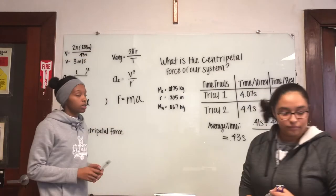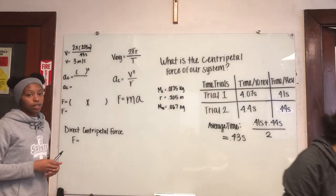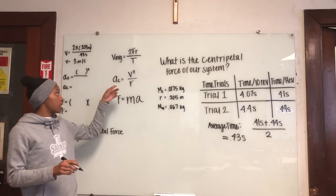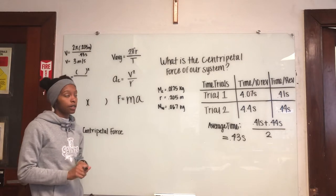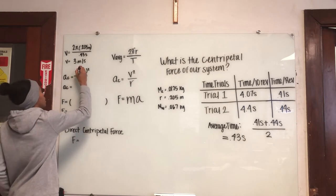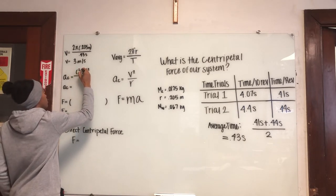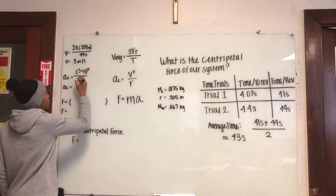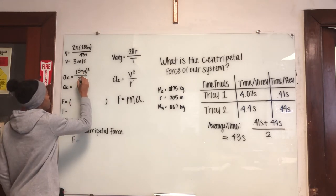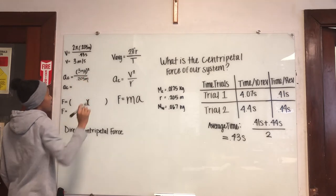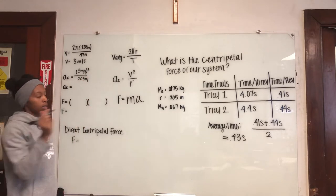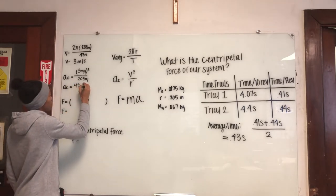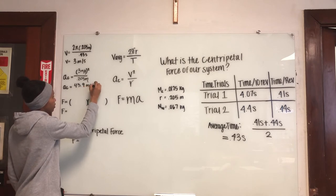And then once we found our average velocity, we can now find the acceleration of our system. And our equation goes as velocity squared over radius. So we're going to go ahead and input our velocity here and then divide by the radius, which again is 0.205 meters. And then that leaves us with the final acceleration being 43.9 meters per second squared.